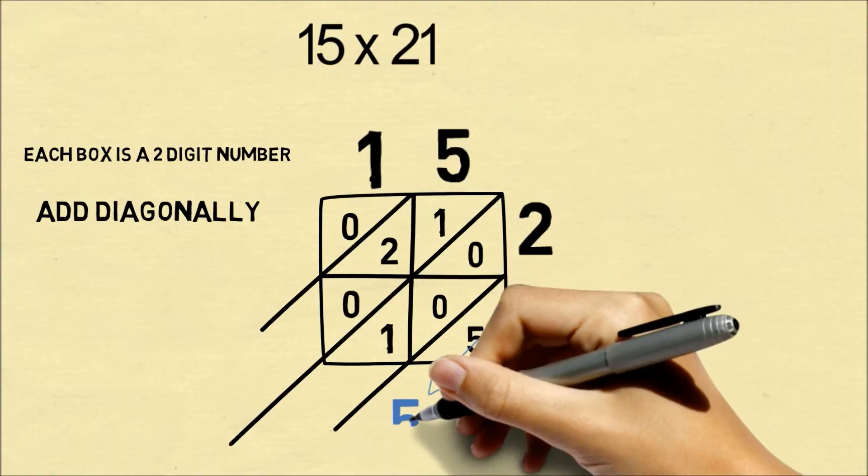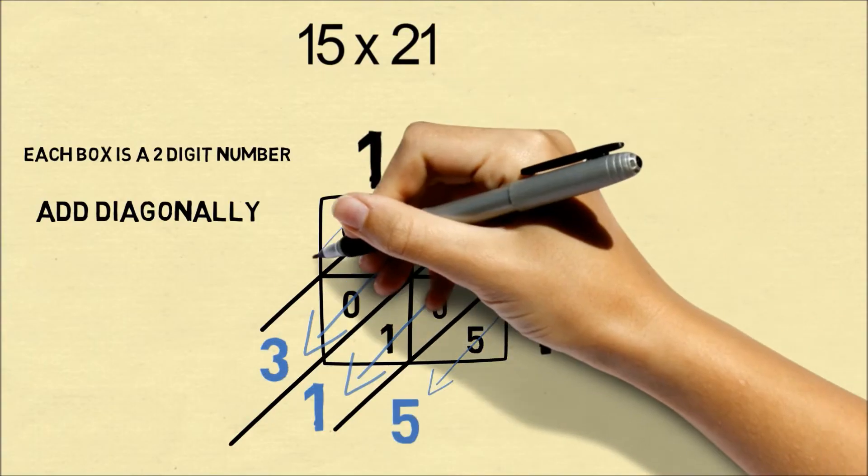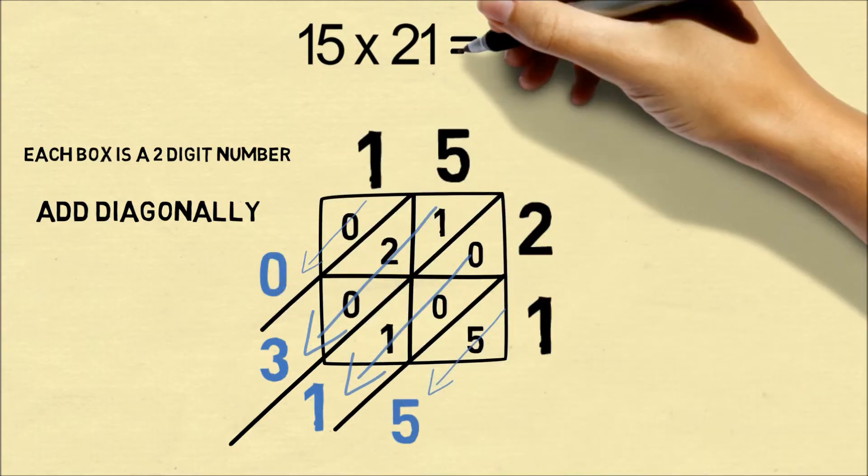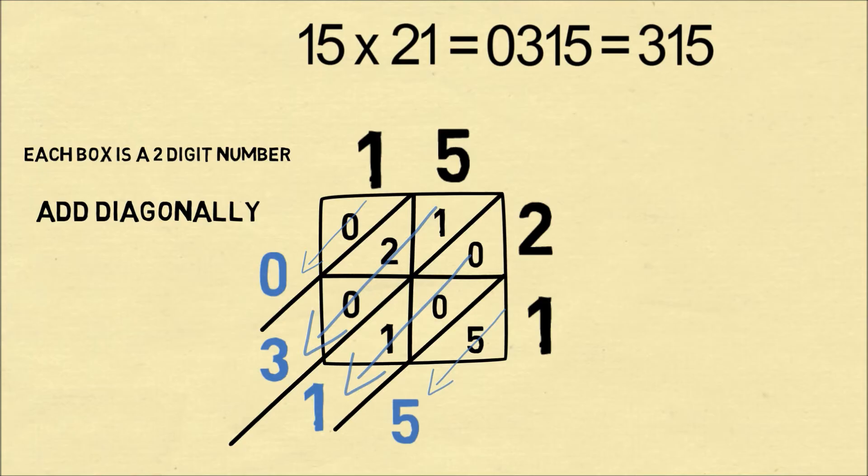Now we add up the numbers diagonally. So the first diagonal is 5, the next is 1, the next is 2 plus 1 is 3, and the final diagonal is 0. So this is 0, 3, 1, 5, which we just write as 315.